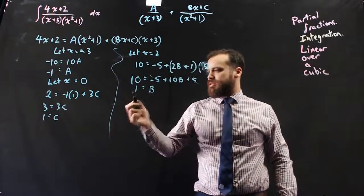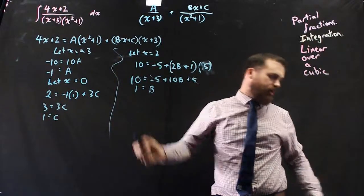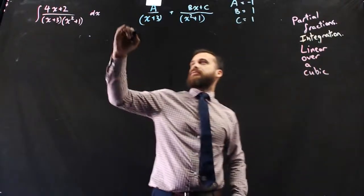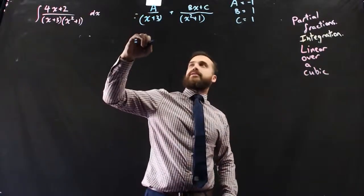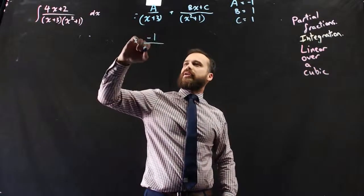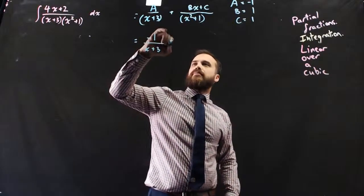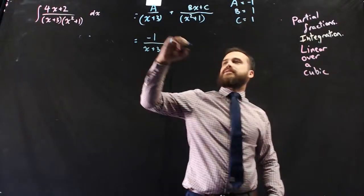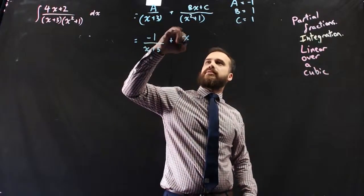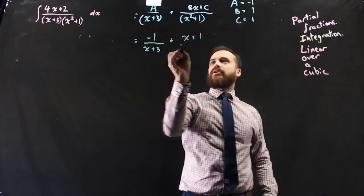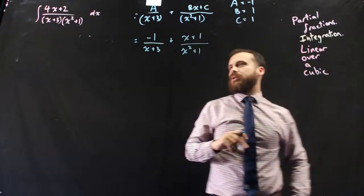So a is negative 1, c is 1, and b is 1. So now that I've got that, I can rewrite this as negative 1 over x plus 3 plus x plus 1 over x squared plus 1.